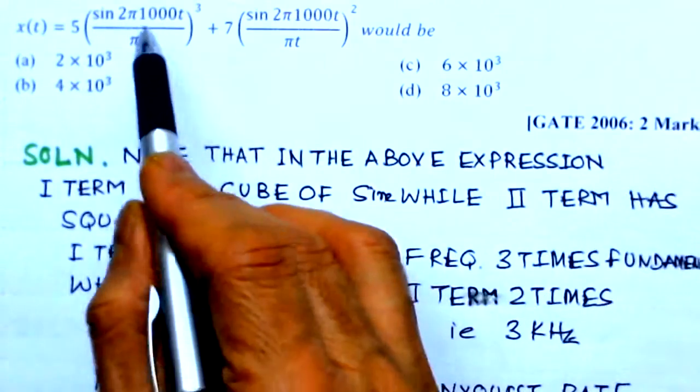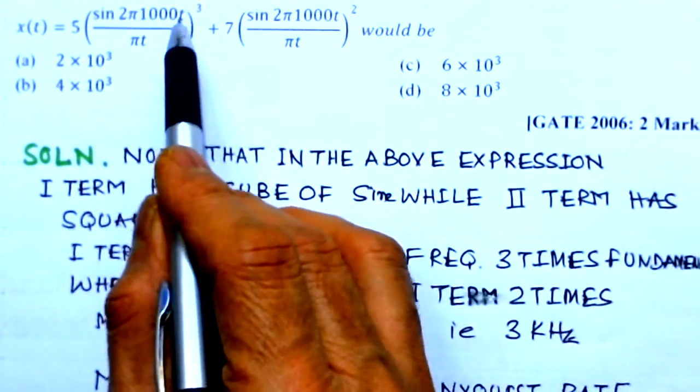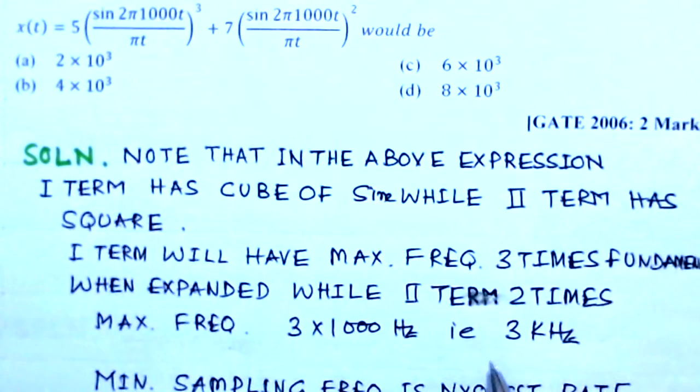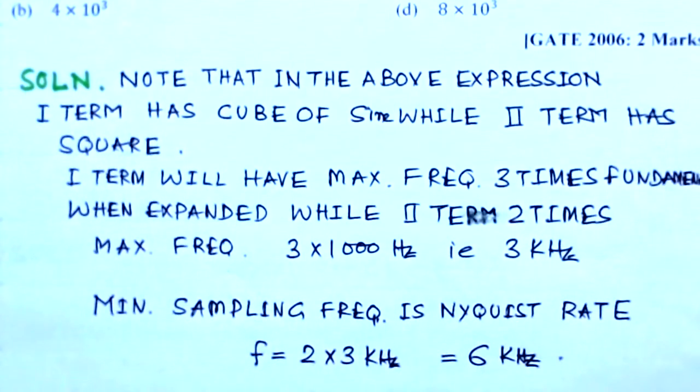This frequency is 1000 hertz. You can notice here 2πωt, this ω is 2πf. So it will give me the frequency of 1000 hertz, 1 kilohertz, so three times that means 3 kilohertz. So the maximum frequency of the signal is 3 kilohertz.